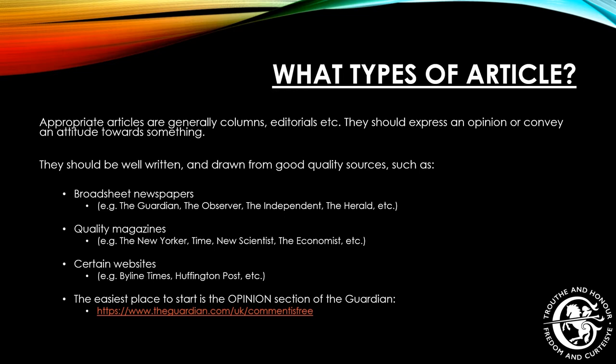Articles should be well written, which means avoid tabloid newspapers and avoid the Metro. They need to have rich, varied vocabulary, varied sentence structure, complex ideas, and come from good quality sources. Broadsheet newspapers are a very good source — The Guardian, The Observer, The Independent, The Herald and so on. Good quality magazines such as The New Yorker, Time Magazine, New Scientist, and The Economist also work well. There are good websites available too, but you need to exercise extra discretion since anyone can publish on the internet.